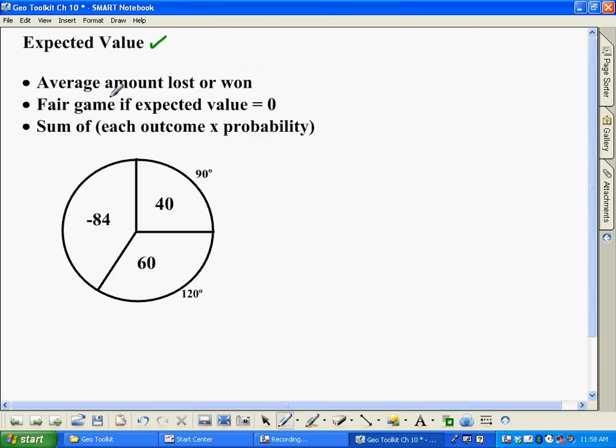It's a fair game if your expected value is zero. If it's not zero, it could be either negative or positive. It would be an unfair game and it would be biased towards either one person or the other. And how do you do expected values? The sum of each outcome times its probability.